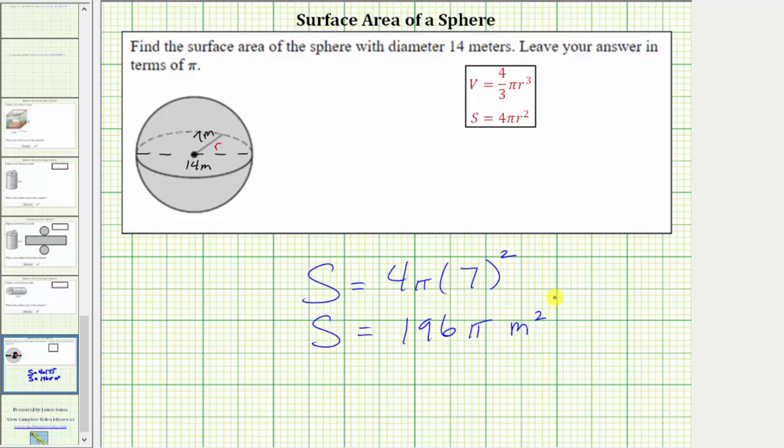So we are told to leave the surface area in terms of pi. Let's also show the surface area as a decimal approximation to two decimal places.